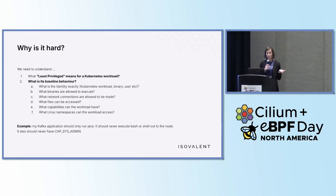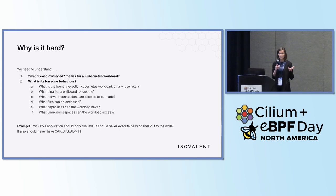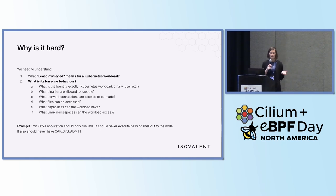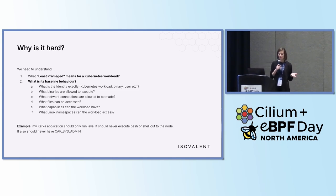But creating least-privileged policies in a Kubernetes environment is hard. Why is it actually hard? First of all, you need to understand what least-privileged means for a Kubernetes workload. What is the baseline behavior? What is the identity we're talking about — is it a Kubernetes workload, a binary, a user, and so on? And then once you identify that identity, what binaries are allowed to execute, what network connections are allowed to be made, what files can be accessed, what capabilities can the workload have, and what Linux namespaces can the workload access?